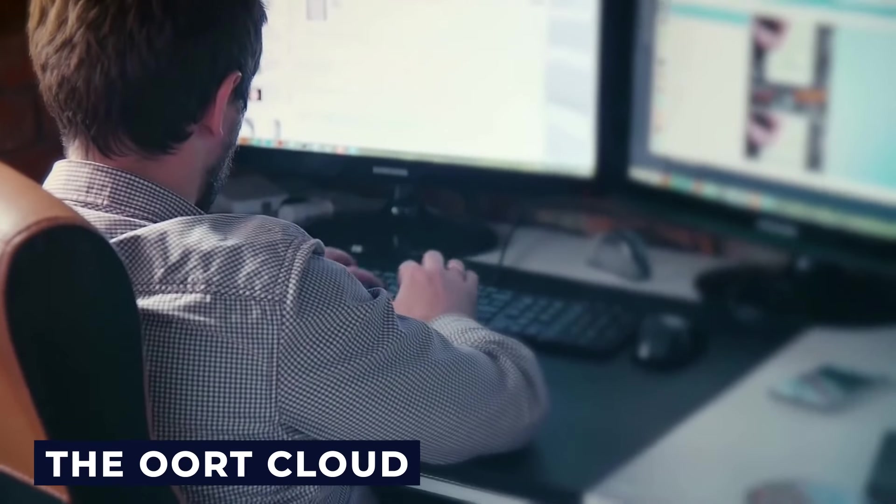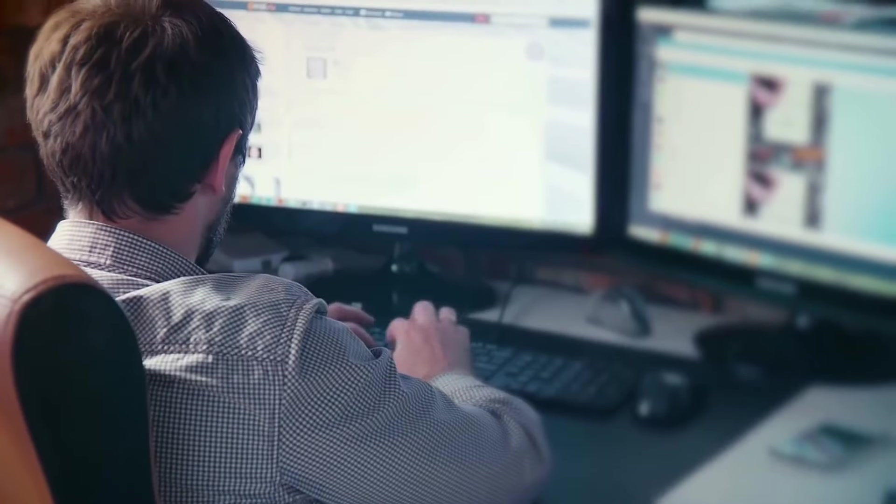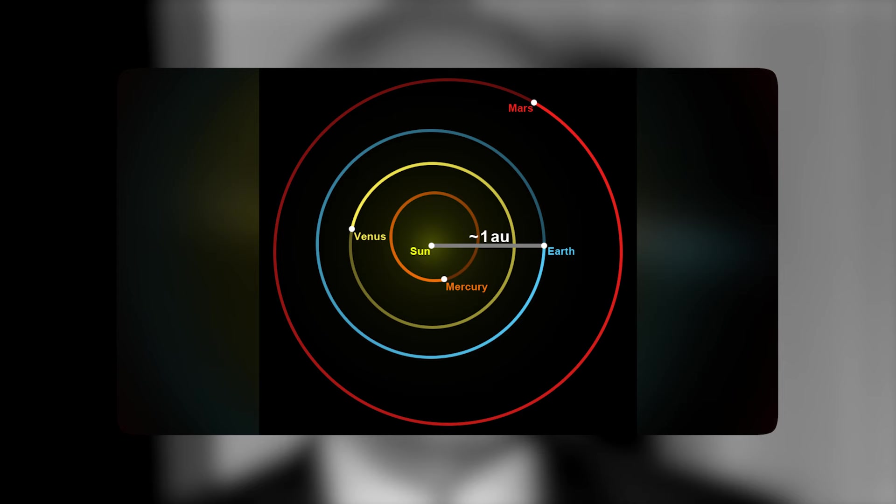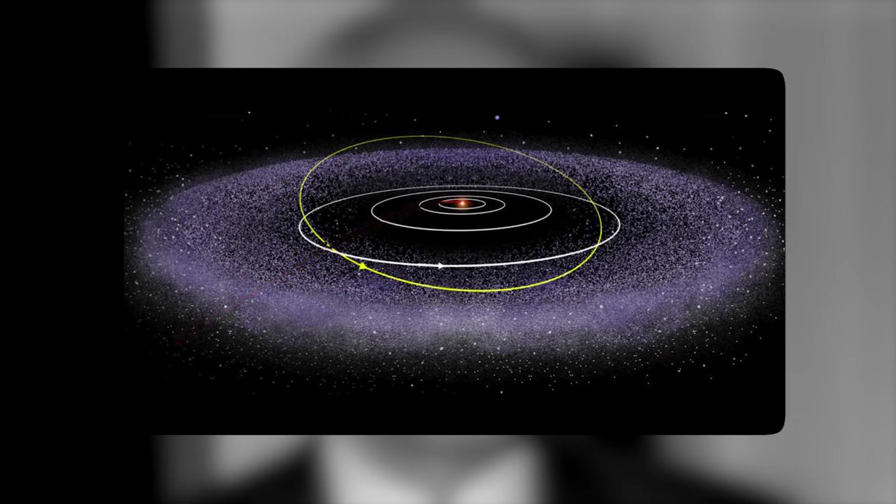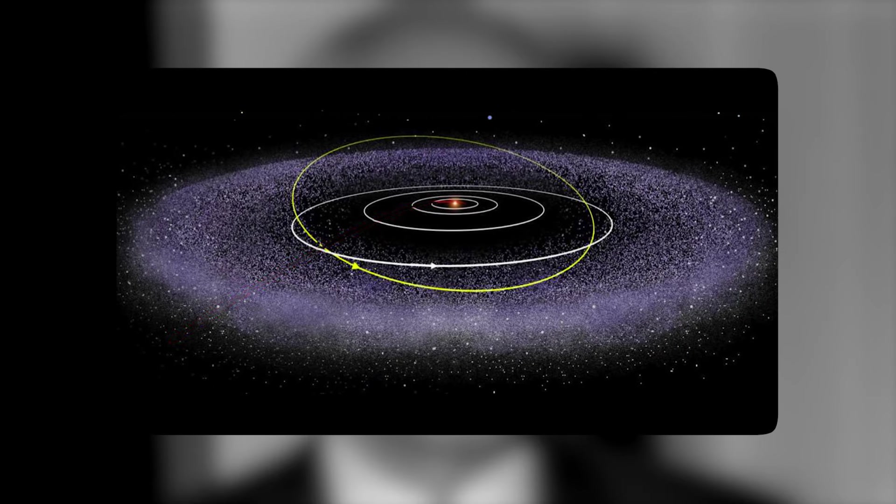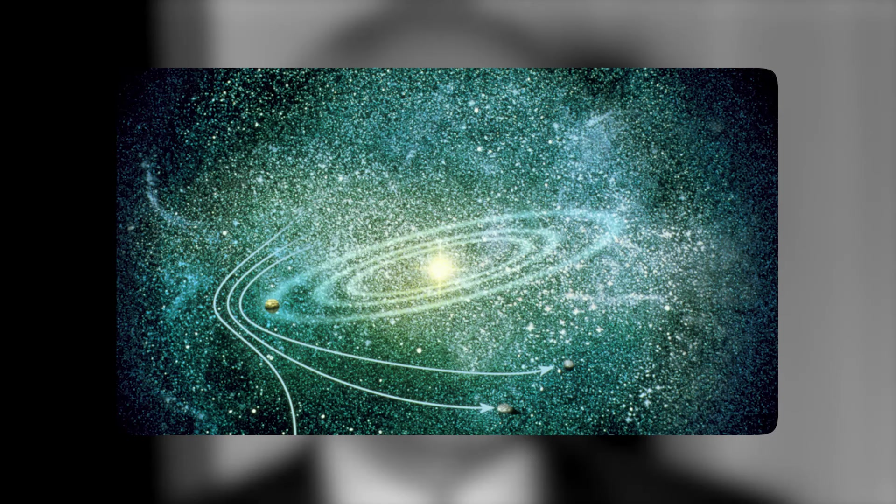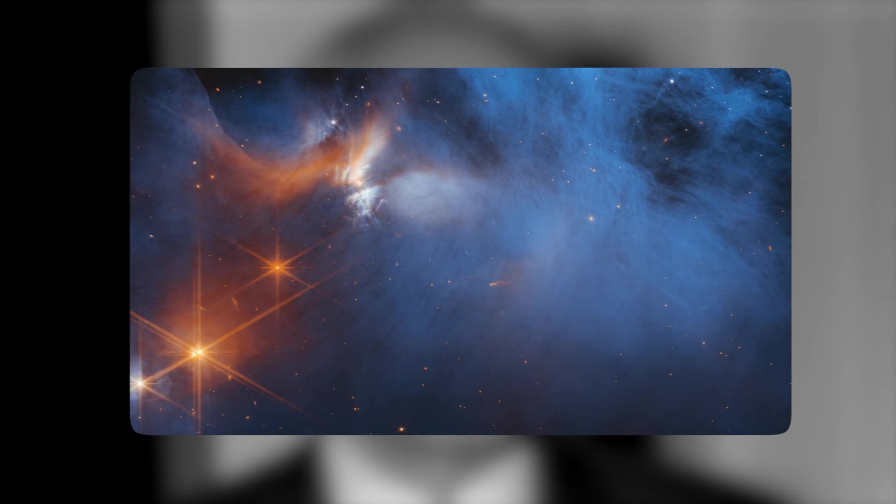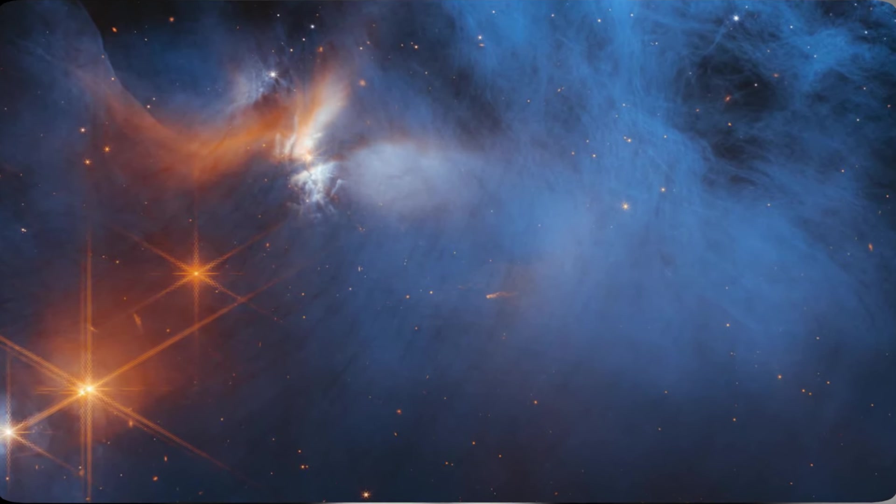The last component is the Oort cloud. According to scientists, the Oort cloud is a theoretical and extremely distant region surrounding our solar system. It is believed to be the source of very old comets that occasionally enter the inner solar system. Named after Dutch astronomer Jan Oort, this hypothetical sphere of icy bodies and comets is situated far beyond the Kuiper belt, extending thousands to potentially tens of thousands of astronomical units from the Sun. This vast and largely unexplored region is thought to contain trillions of icy objects, remnants from the formation of the solar system. These icy bodies are composed of volatile substances like water, methane and ammonia, frozen in the extreme cold of space.